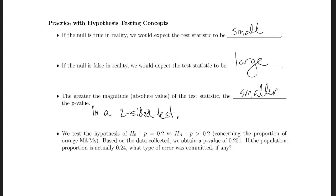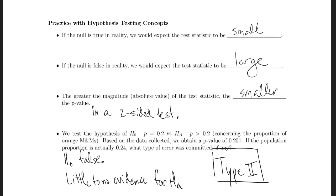Well, if the population proportion is truly 0.24, that means that the null hypothesis is false. But if the p-value is 0.201, we're going to say that there's little to no evidence for the alternative. Since the null was false, but we're still saying that the alternative is unlikely, that's considered a type 2 error. If the null is false, we would hope that our test statistic would be large.